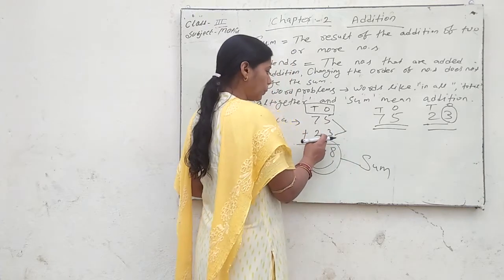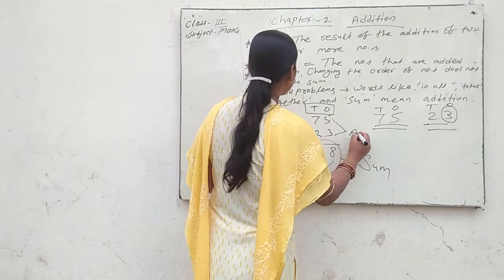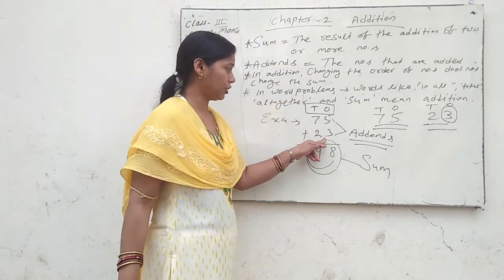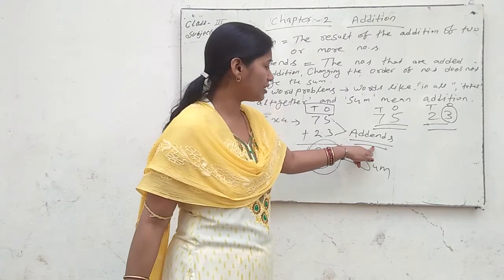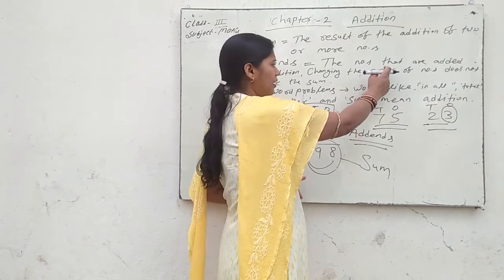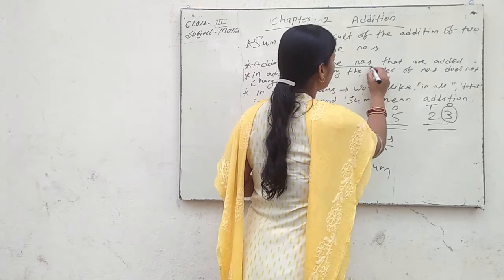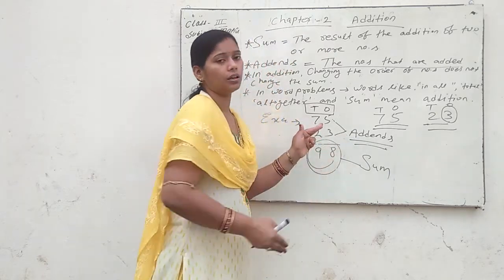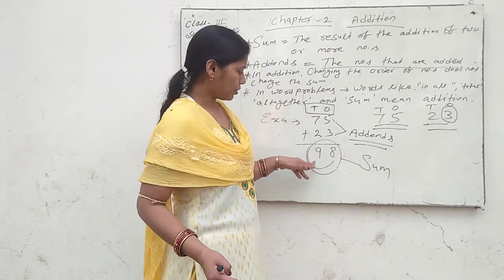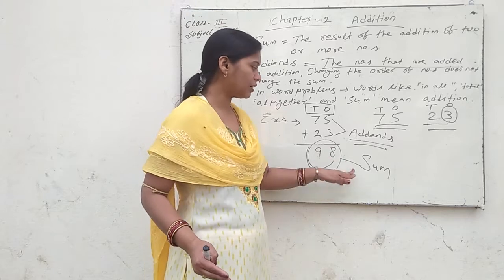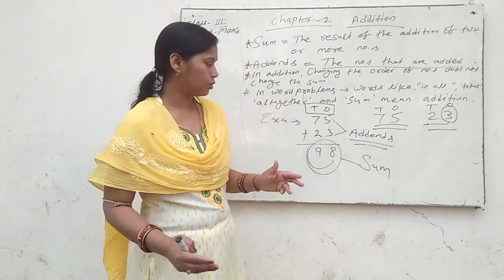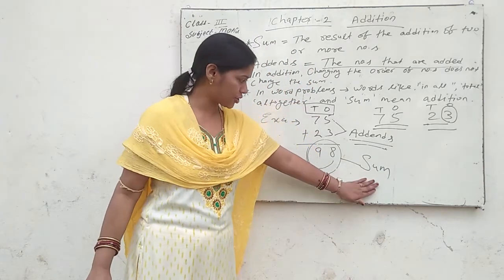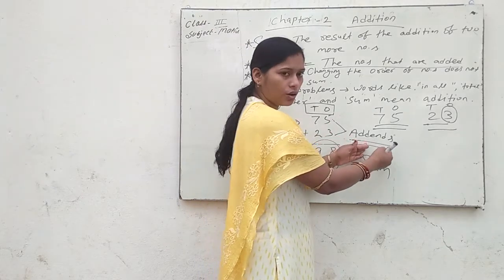The numbers 75 and 23 are called addends. What is an addend? Addend means the numbers that are added. So 75 and 23 are both your addends. The result of addition is called the sum, and the numbers that are added are called addends — these are your two key points.